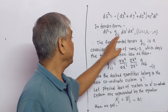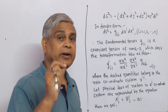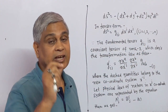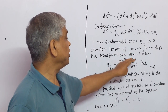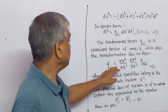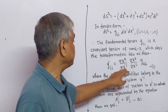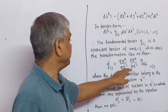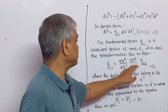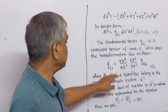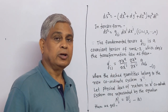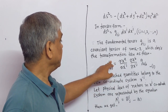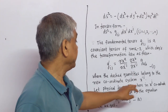Where gij is the metric tensor or fundamental covariant tensor. This fundamental tensor gij is a covariant tensor of rank 2, which obeys the transformation law: g'ij = (∂xᵃ/∂x'ⁱ)(∂xᵇ/∂x'ʲ) g_ab. This is the law of transformation of a covariant tensor of rank 2, labeled equation 1. The dashed quantities belong to the new coordinate system x'ⁱ.